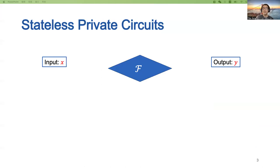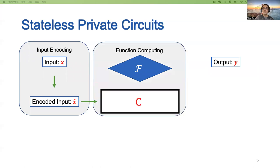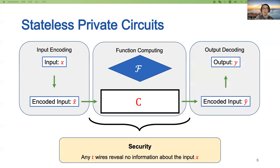Suppose f is a function that we want to compute; it takes as input x and outputs y. A stateless private circuit for the function f contains three parts: an input encoder, which encodes the input x to x-hat; a circuit C that takes x-hat, computes f, and outputs the encoded result y-hat; and an output decoder that decodes y-hat and outputs y. The security requires that any T wires should reveal no information about the input x.